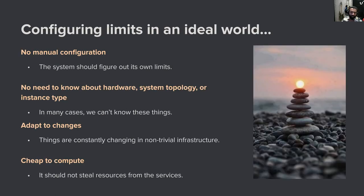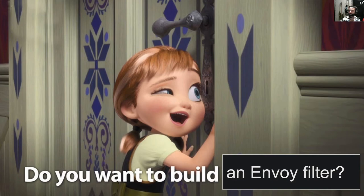In an ideal world, we wouldn't have to do manual configuration. The system would figure out its own limits — no need to know about system topology or hardware, and in cloud environments we often can't know this anyway. We'd also want it to adapt to changes: if a commit degrades or improves application performance, we want it to adapt. And we want it to be cheap to compute, because the purpose is to run the application, not just to run Envoy. We can do this in an Envoy filter.